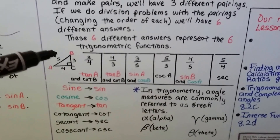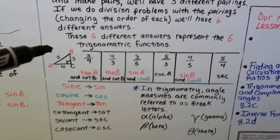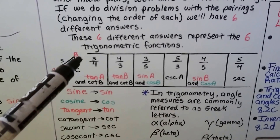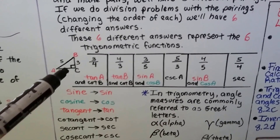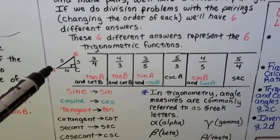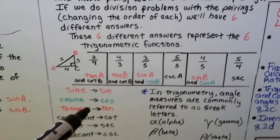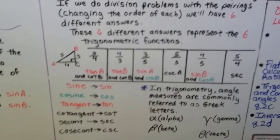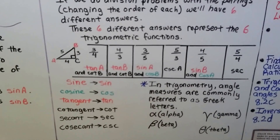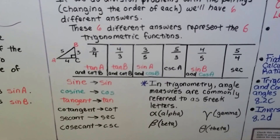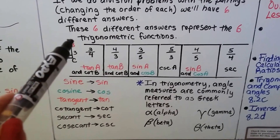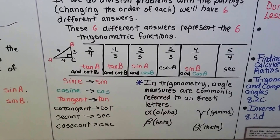Here's a right triangle with sides three, four, and five. If we put leg three over leg four, that's the tangent of A — it's also the cotangent of B. The ones in red and green are the ones we'll cover in this chapter; the ones in black are for honors geometry. If we put leg four over leg three, that's the tangent of B, which is also the cotangent of A.